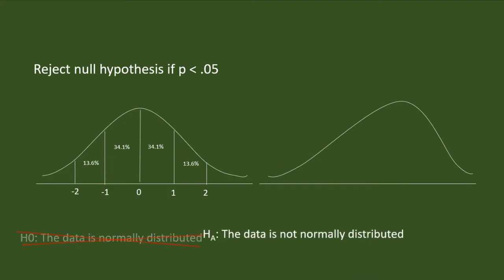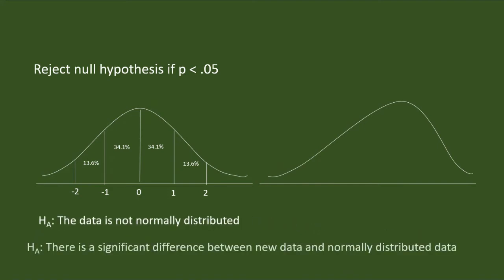By rejecting the null hypothesis, we confirm the alternate hypothesis — that there is a significant difference between the new data and normally distributed data. That means the new data is not normally distributed.